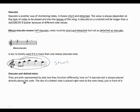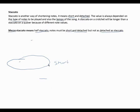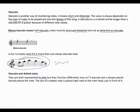Staccato and dotted notes are both represented by dots, but the dots are different and they function differently. A staccato dot is placed directly above the note, while the dot of a dotted note is placed right next to the note — they look similar but serve different purposes.